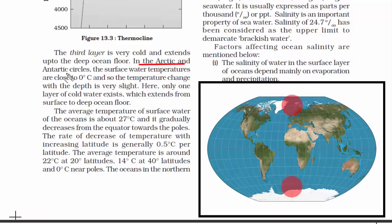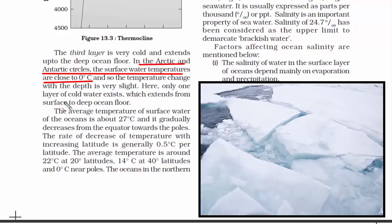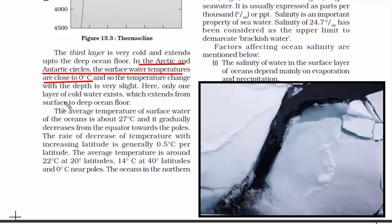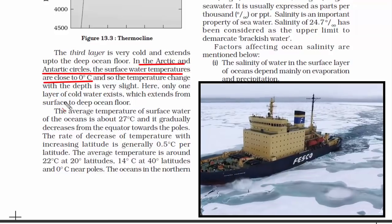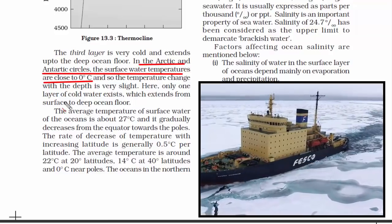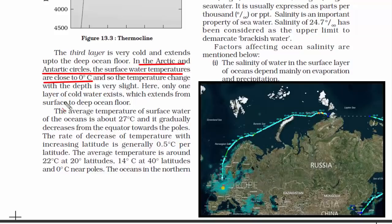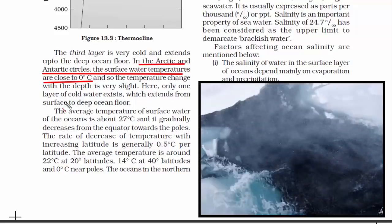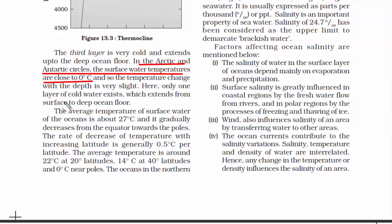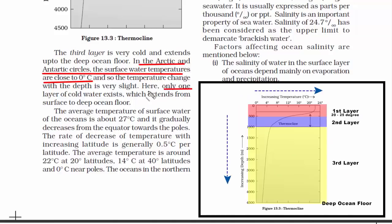In the Arctic and Antarctic circles — the polar regions — the surface water temperature is close to 0 degrees Celsius, meaning the top layer of ocean water is frozen. That's why countries like Russia and Canada use icebreaker ships to navigate through the northern sea route, which lies entirely in Arctic waters. These special ships are designed to break through ice in extremely cold climatic regions. In polar regions, the surface water is almost frozen and there is only one layer of cold water — not the three-layer system.